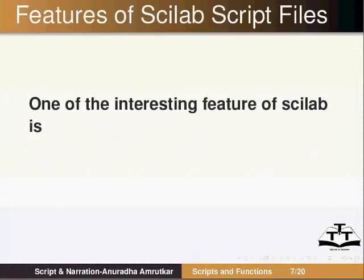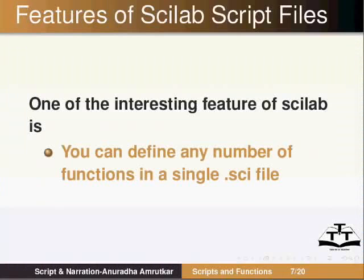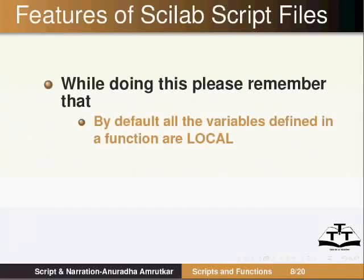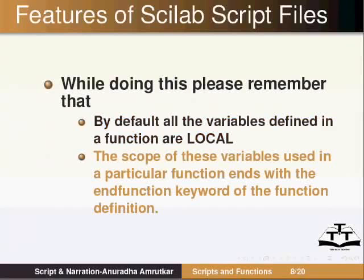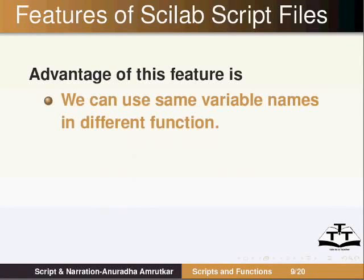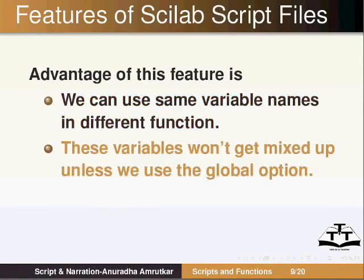One of the interesting features of Scilab is that you can define any number of functions in a single .sci file. While doing this, please remember that by default all the variables defined in a function are local. The scope of these variables used in a particular function ends with the endfunction keyword of the function definition. The advantage of this feature is that we can use the same variable names in different functions, and these variables won't get mixed up unless we use the global option.